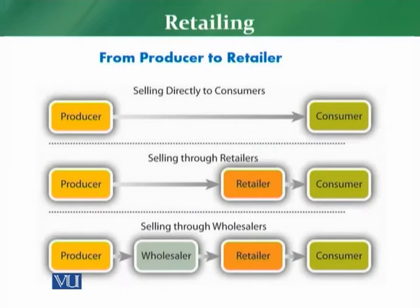Now I have brought up a diagram which explains the different journeys a producer follows to reach its customer. First, you can see a producer directly approaching a consumer — selling products directly to the consumer. For example, there is a honey seller who is the producer, and if he is directly selling to the customer, then that producer is also considered a retailer.